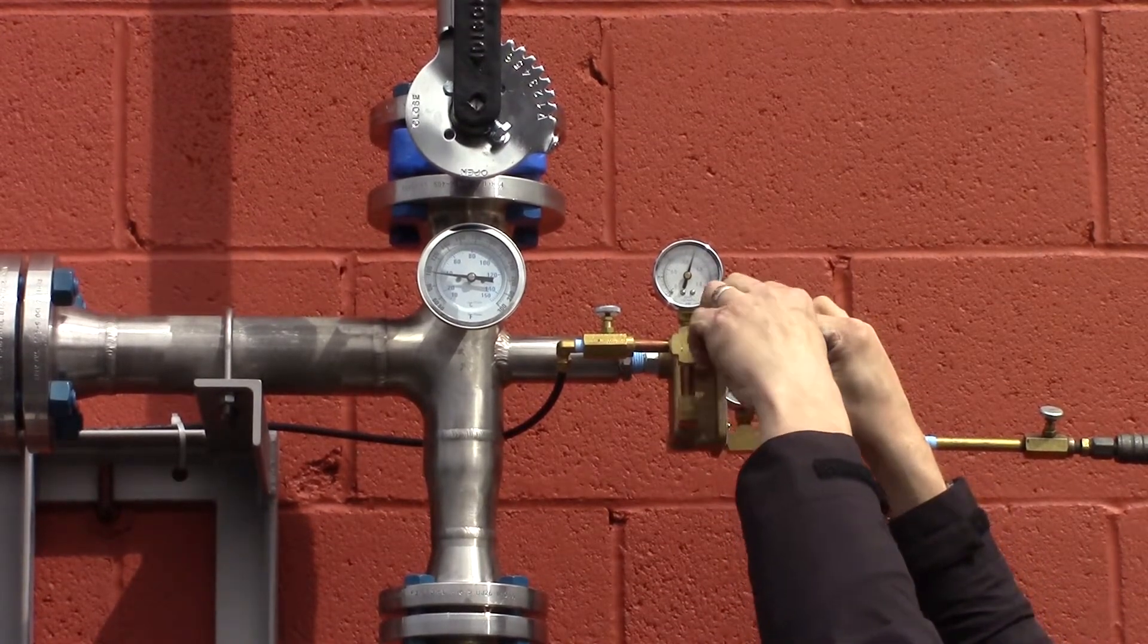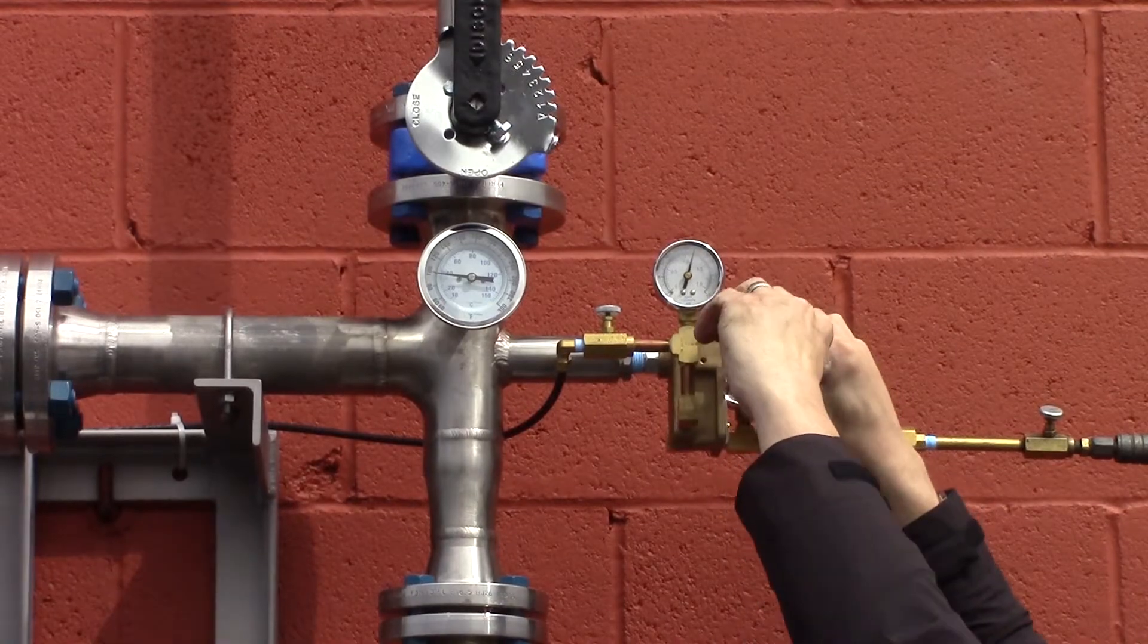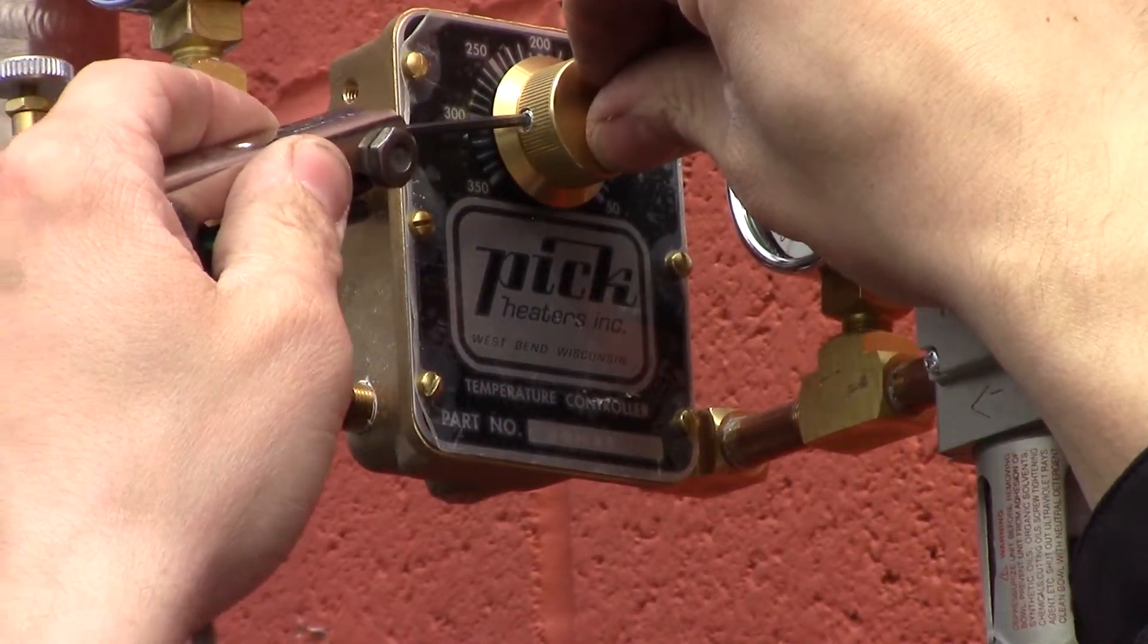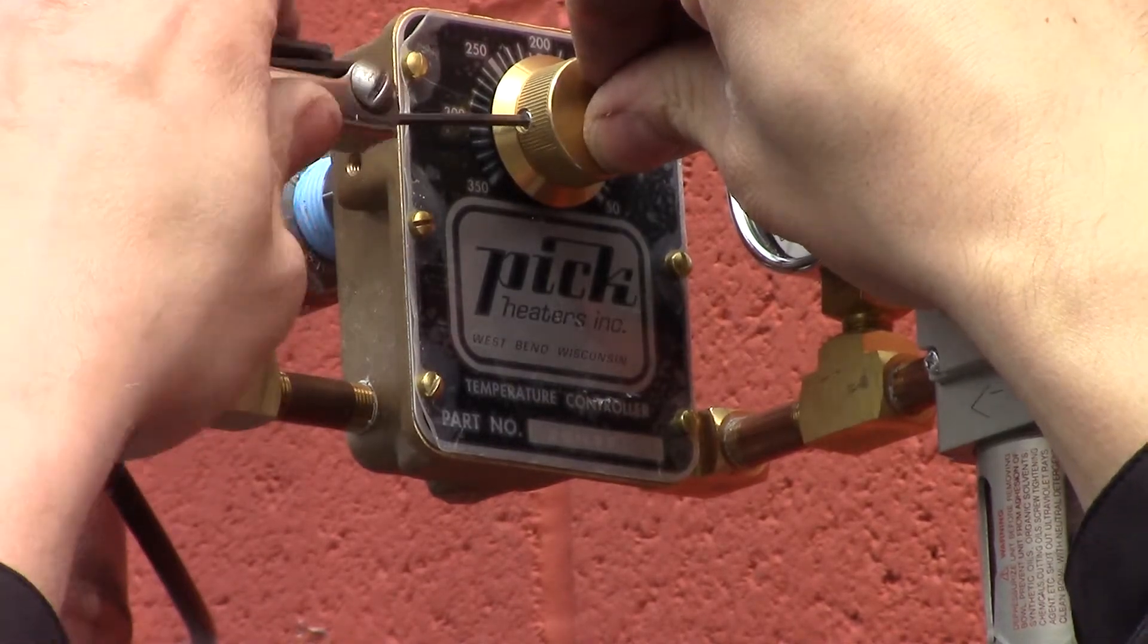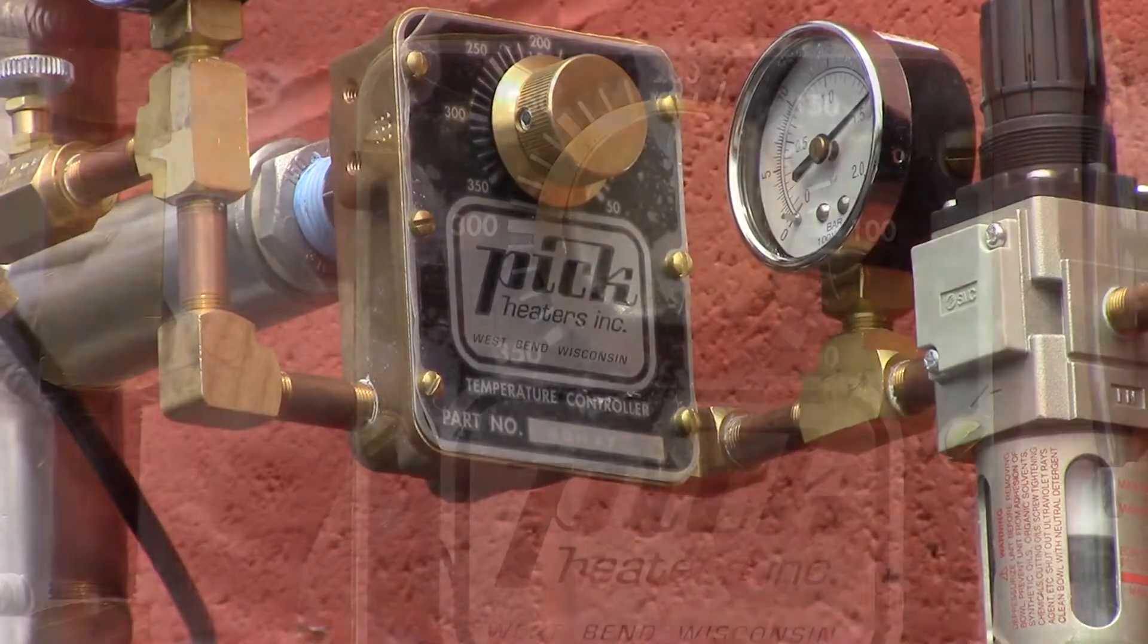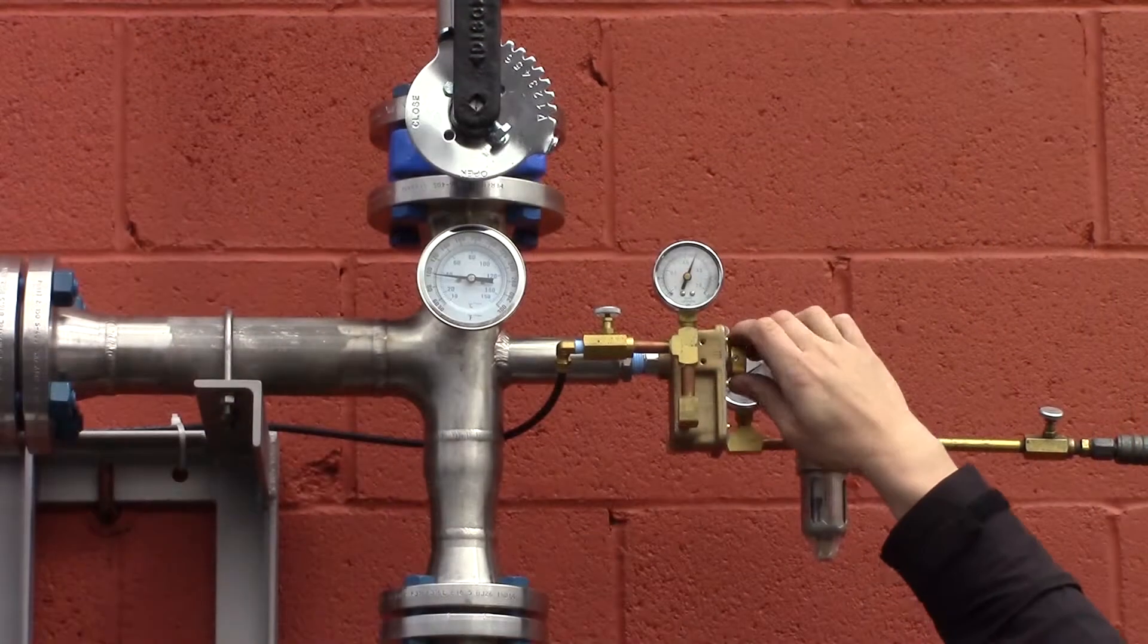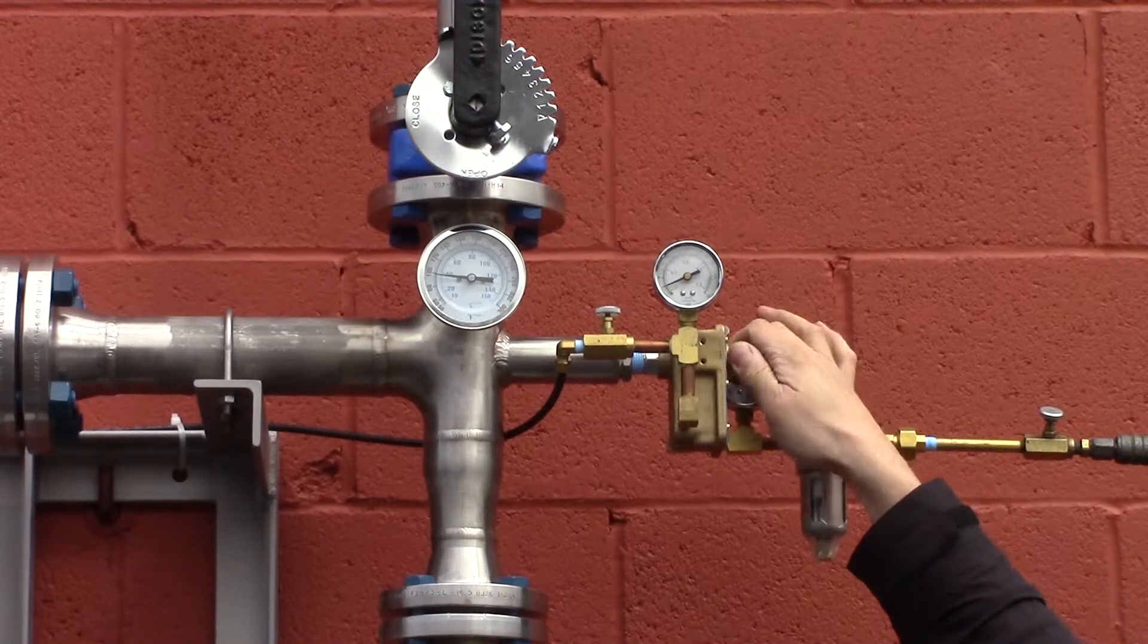Then firmly tighten the set screw in the knob. Verify the knob and dial thermometer read the same temperature. Rotate the temperature controller knob clockwise to lower the temperature set point and shut down the pick heater.